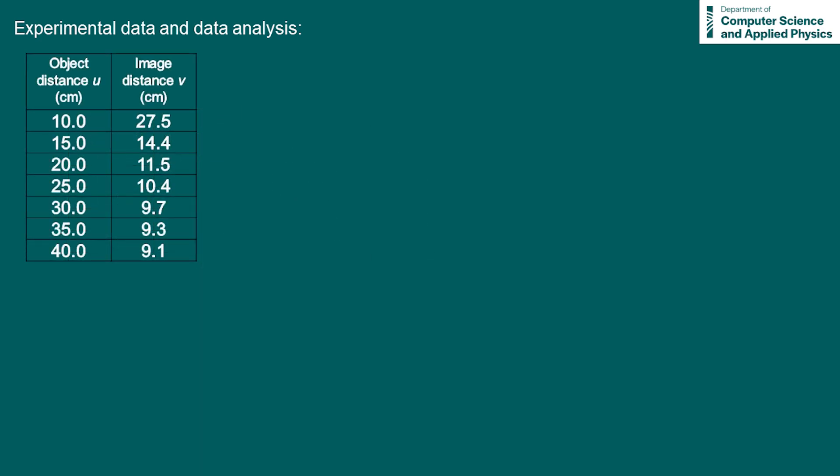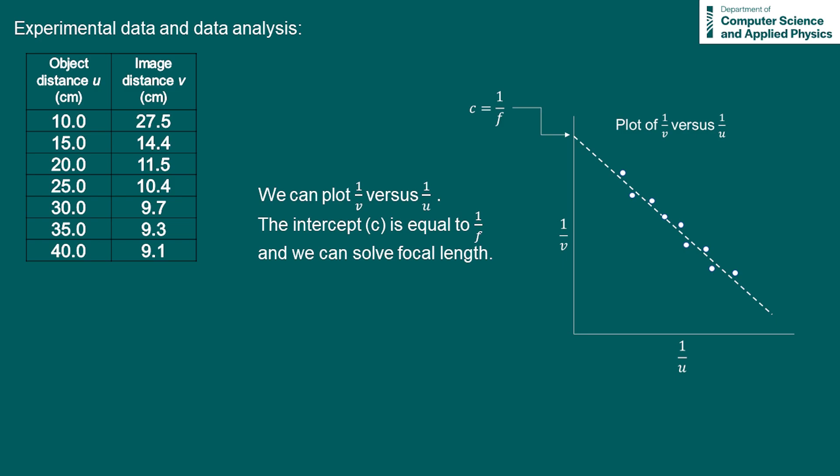Another method to determine the focal length would be to plot 1 over V versus 1 over U and to determine the intercept of the line of best fit. This was discussed in our concave mirror video.